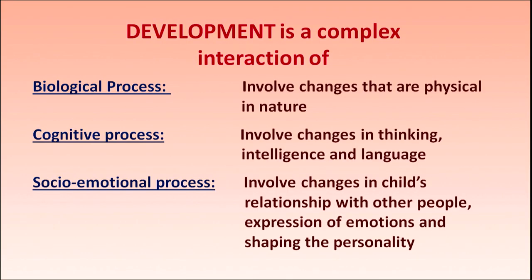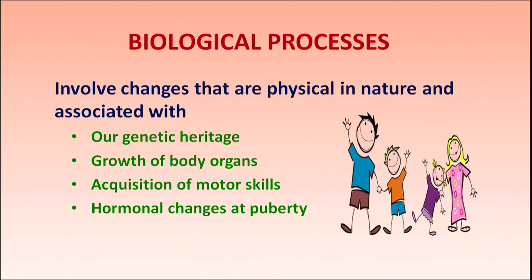Development involves qualitative changes in the body and is difficult to measure compared to growth. Since it is a complex process, it involves the interaction of three processes: biological, cognitive, and socio-emotional. The biological process involves changes in physical form associated with genetic heritage inherited from our parents — growth in body organs, acquisition of motor skills (using fingers, arms, and peripheral organs for any activity), all related to hormonal changes that fluctuate greatly at puberty.